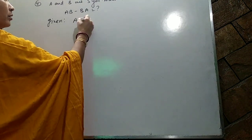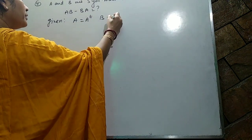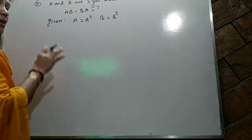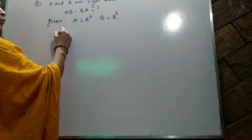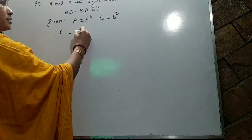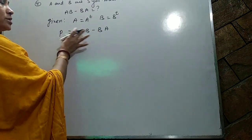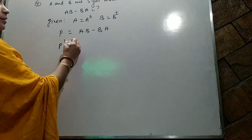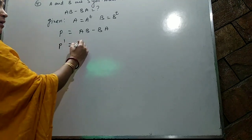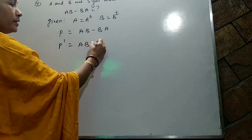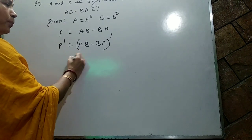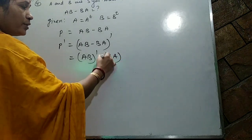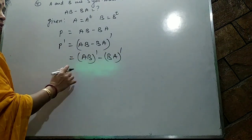A equals A transpose and B equals B transpose. To check whether any matrix is symmetric or skew-symmetric, you have to take both sides transpose. Take AB minus BA and take the transpose of both sides.